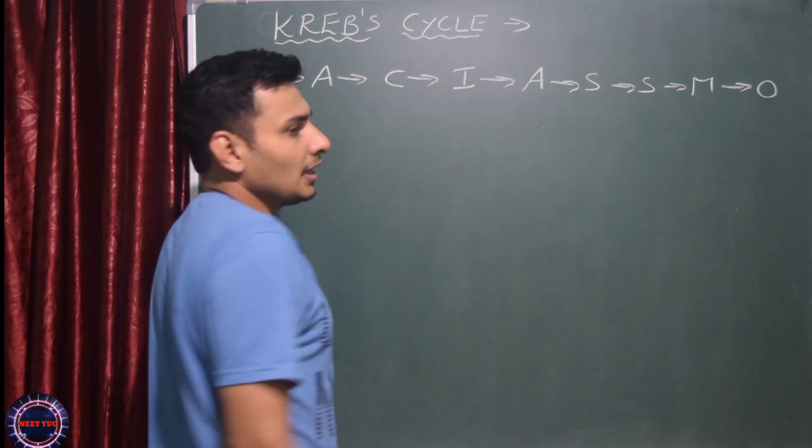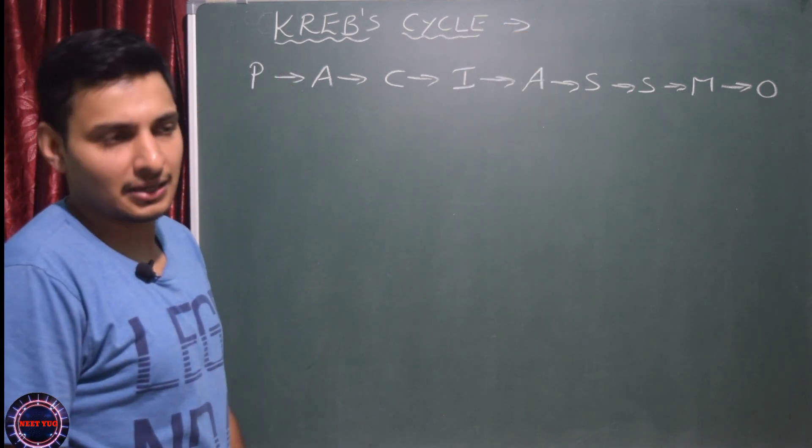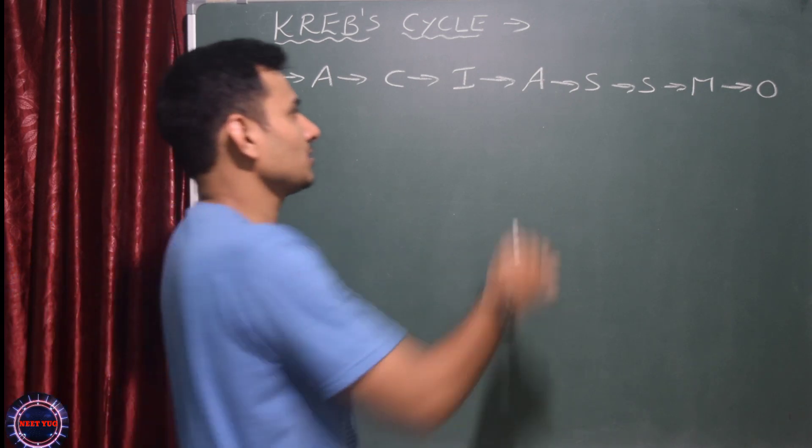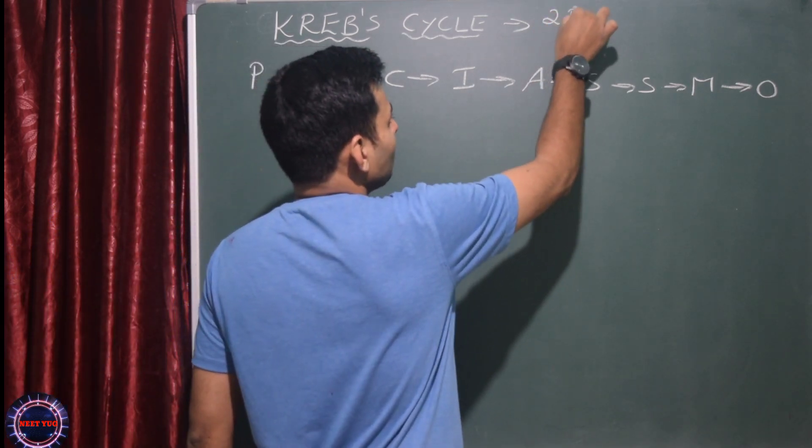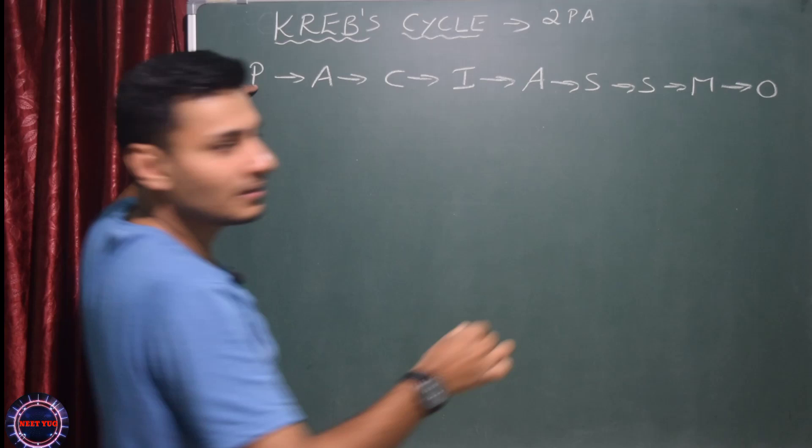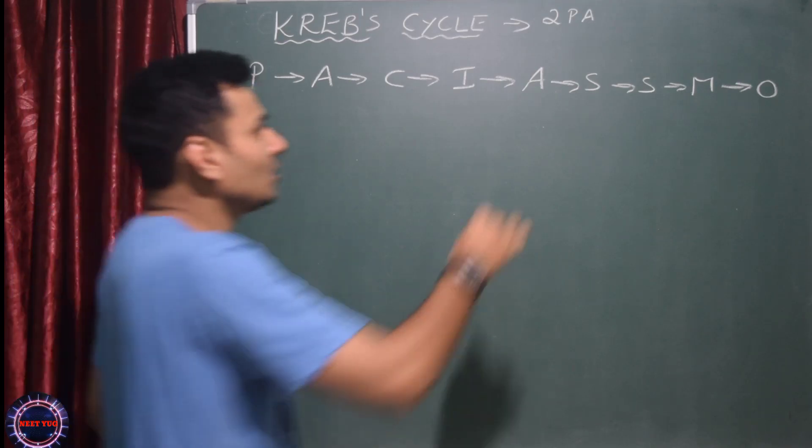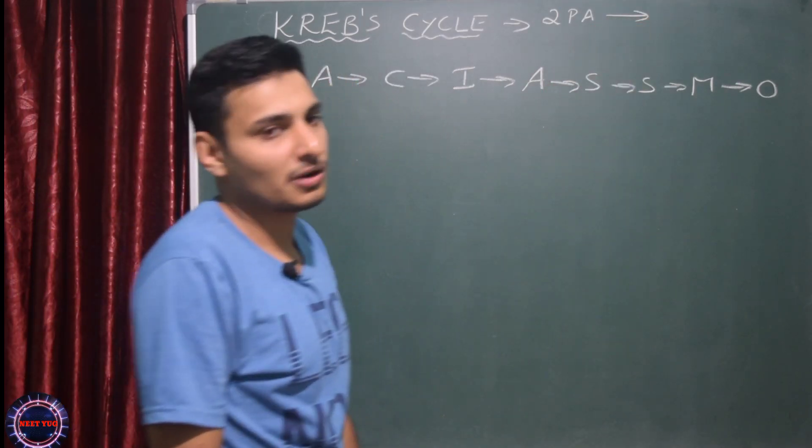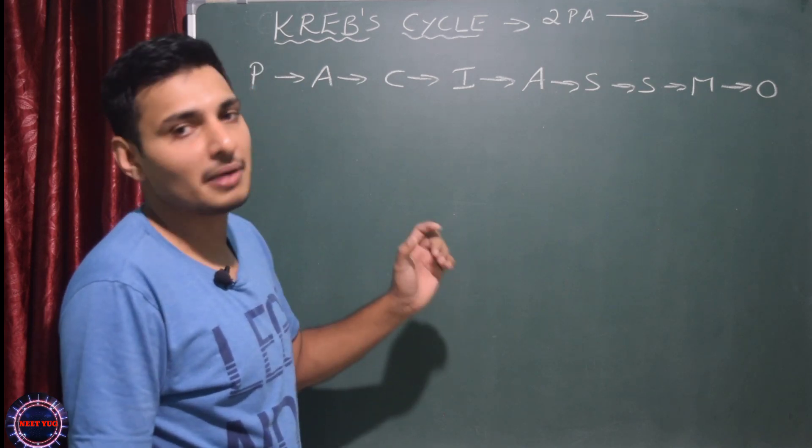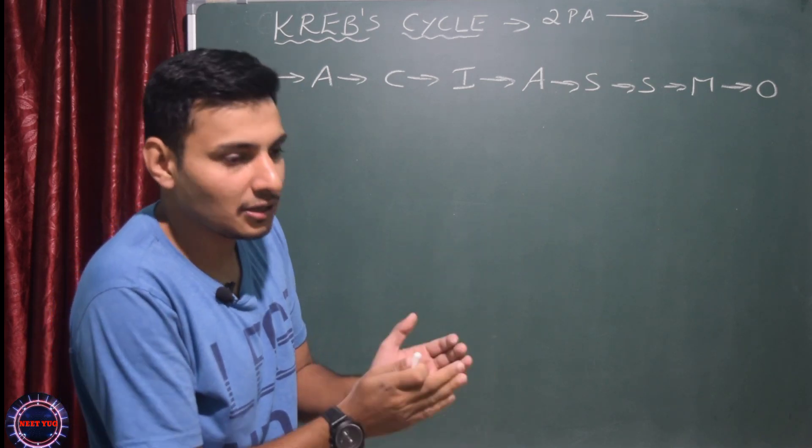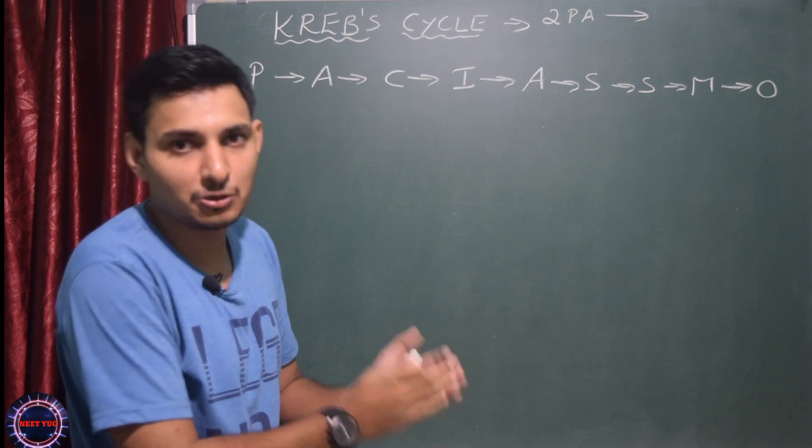Krebs cycle takes place here. As you know, glycolysis takes place in the cytoplasm. Glycolysis end product is pyruvic acid. How many pyruvic acids do we get? Two pyruvic acids.